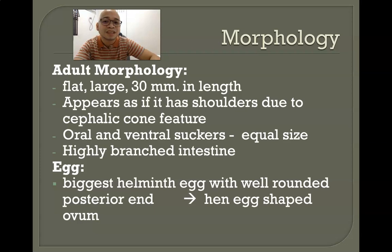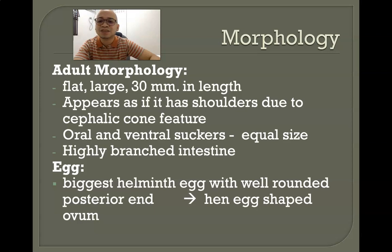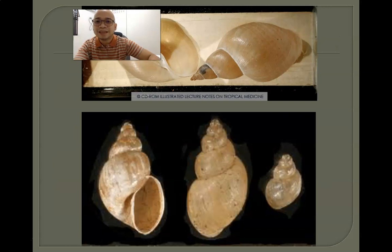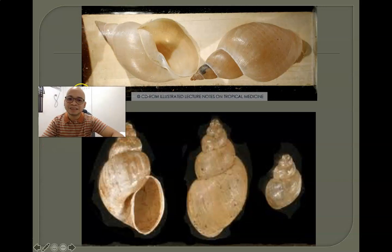The adult appears as if it has shoulders, which is attributed to the presence of the so-called cephalic cone. The oral and ventral suckers are of equal size, and the intestine is highly branched. The ova are considered one of the biggest helminth eggs, with a well-rounded posterior end, giving the egg a tense egg shape.